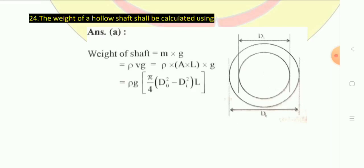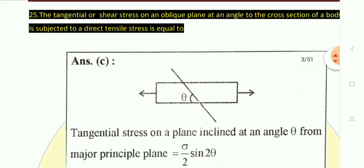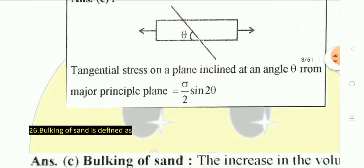The tangential or shear stress on an oblique plane at an angle to the cross-section of a body subjected to direct tensile stress: the correct answer is sigma/2 × sin(2θ). This is the tangential stress on an oblique plane at an angle to the cross-section of a body subjected to direct tensile stress.